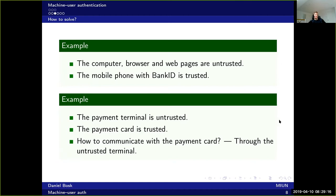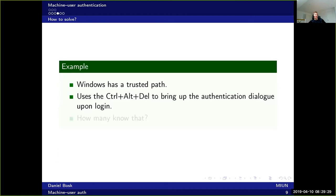In all of these examples, you need some type of trusted interface that you can interact with. For instance, when you're logging into a publicly available Windows computer — like in a university lab — Windows has a so-called trusted path. You're supposed to press Ctrl+Alt+Delete to bring up the authentication dialogue when you want to log in.